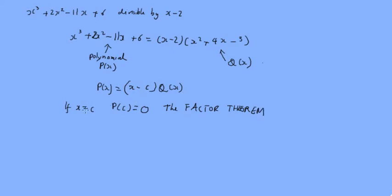And it makes sense. If x equals c, then c minus c is 0, so p of c will be 0. For instance, the factor here is 2, so p of 2 gives us 2 cubed plus 2 times 4 minus 11 times 2 plus 6, and working all that out, we get 0. This only works when x minus c is a factor and there's no remainder.